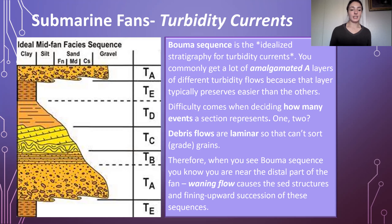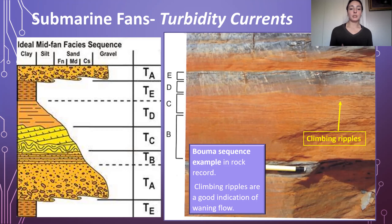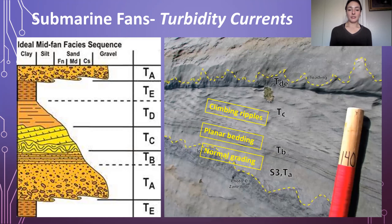Debris flows are laminar so they don't sort or grade grains. Even the Ta section of Bouma sequences already shows grading and sorting, so when we see Bouma sequences — or even partial ones — in the rock record, we can be fairly confident we're looking at the distal part of a submarine fan rather than the proximal debris flow zone. Another indicator of the distal setting is sedimentary structures indicating waning flow, such as the fining-upward succession and climbing ripples. In this outcrop the Tb, Tc, Td, and Te sections are nicely labeled — we can see the sandy planar-laminated Tb, the rippled Tc, and the finer muddy sections above.